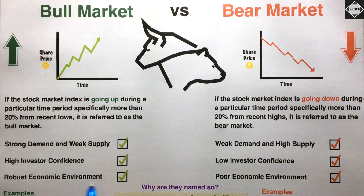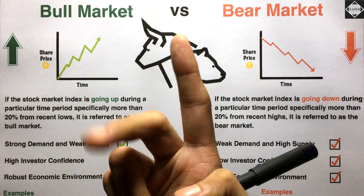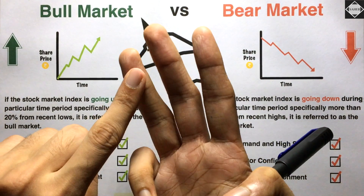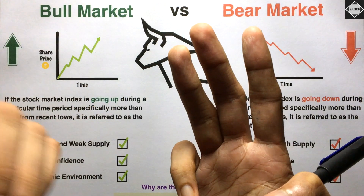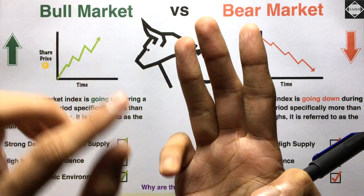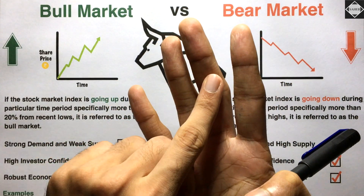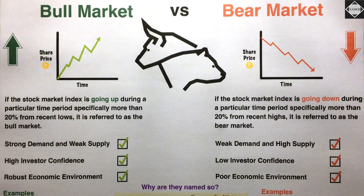The third characteristic is a robust economic environment. This means there is very less unemployment, companies are making huge profits, and people have sufficient disposable income — the income left after paying expenses and taxes. When people spend on goods, companies make profits. Inflation is also lower. Overall the GDP is good and everything is performing well. That's the bull market.